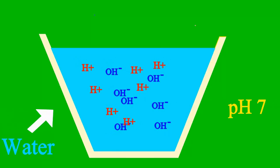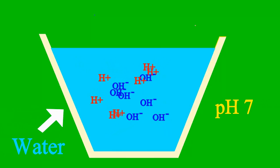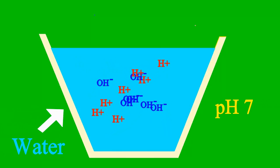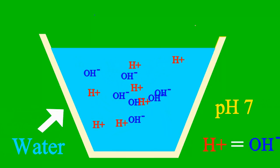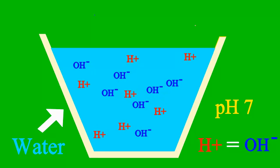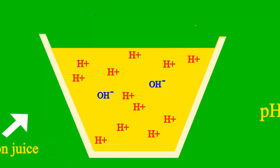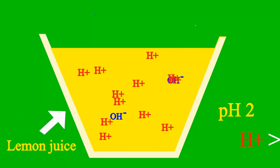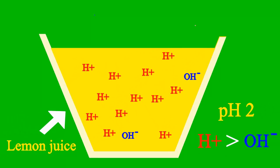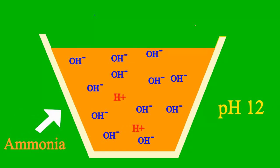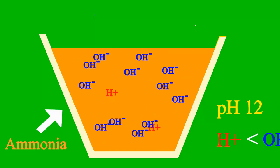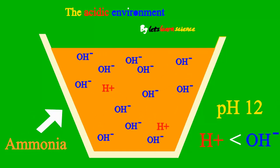When the pH is 7, the sample is neither an acid nor a base. Less than 7, it's acidic. More than 7, it's a base all the way.